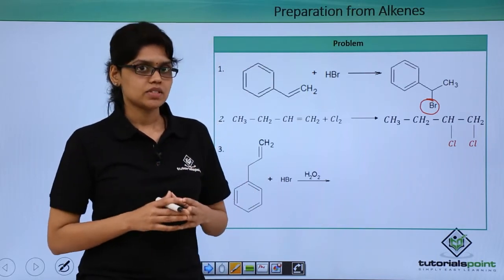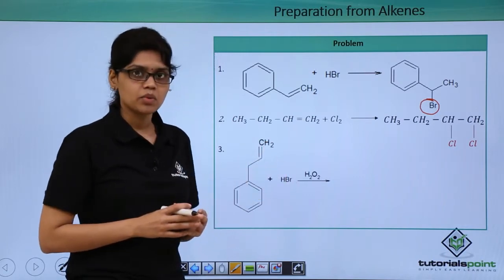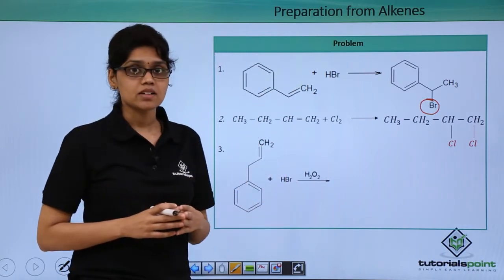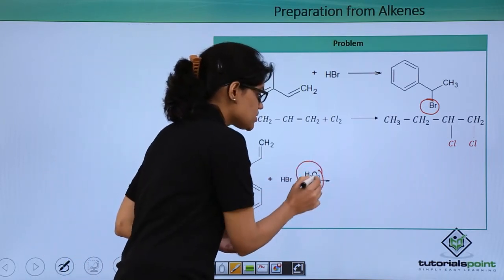Now let us look at the third reaction. We are adding HBr across the double bond very similar to the first reaction. The only difference is that in this reaction we have the presence of peroxide.